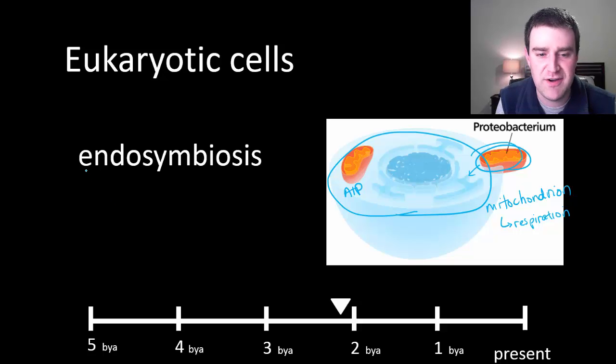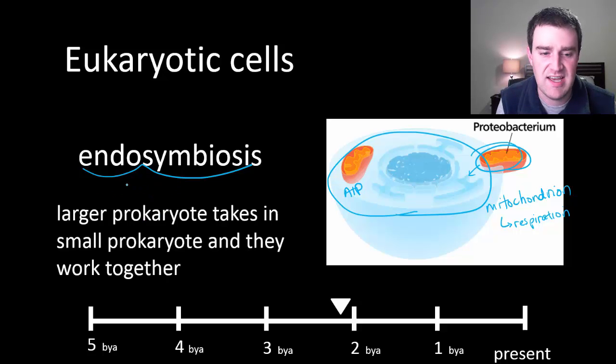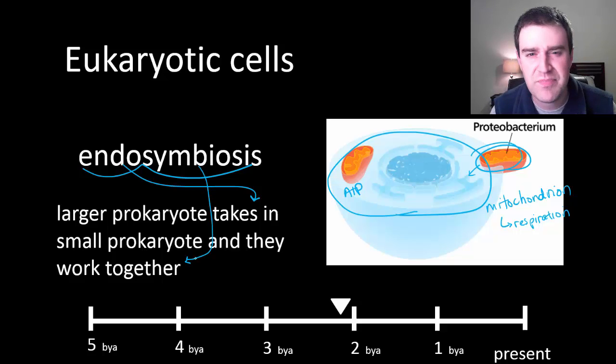And so really it represents - we use this very fancy term to describe this event - endosymbiosis is really just this idea that maybe the larger cell took in the smaller cell, so that's the endo part of it, and then they decided to work together over the long term. That's the symbiosis part of it. And so it's just kind of an internal symbiosis instead of two organisms working together outside the body.